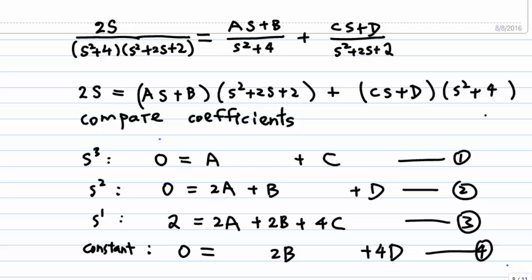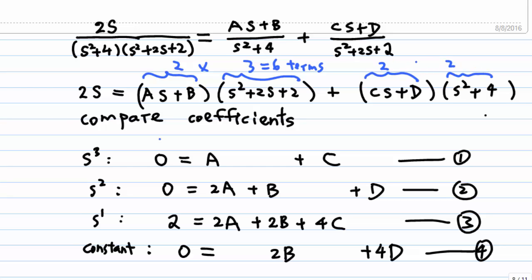Now that we have 4 equations and 4 unknowns, let's check our equations first before we solve them. Note the number of terms: the first factor has 2 terms and the second has 3 terms, so multiplying together gives 6 terms. The other part has 2 terms times 2 terms giving 4 terms — total 10 terms. Counting the terms in our equations: 1, 2, 3, 4, 5, 6, 7, 8, 9, 10. Therefore, we have not missed any term and we are ready to solve these simultaneous equations.